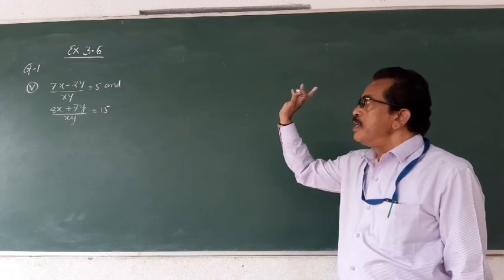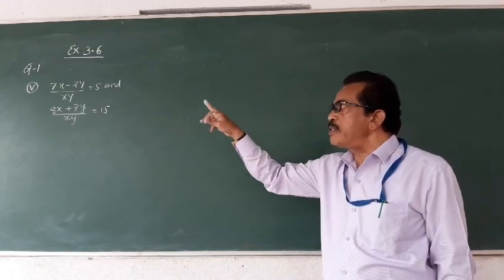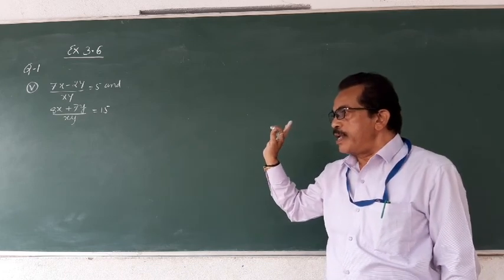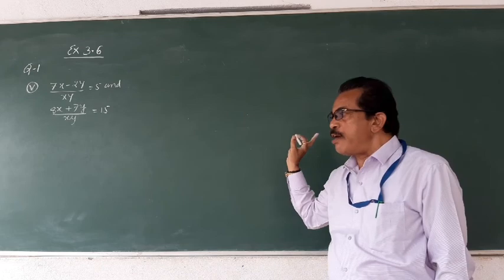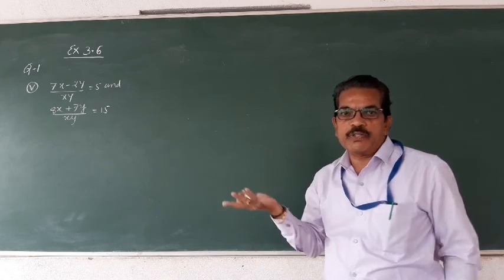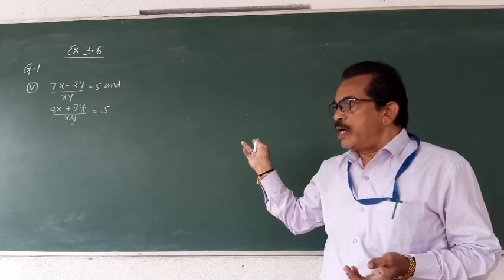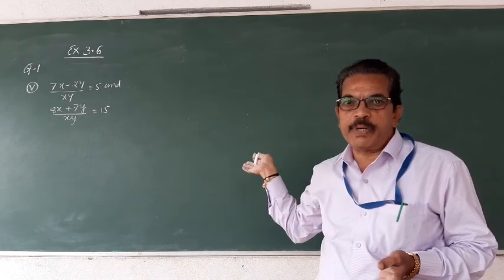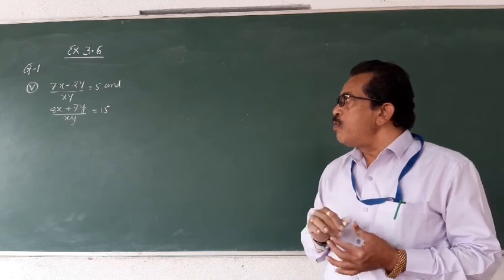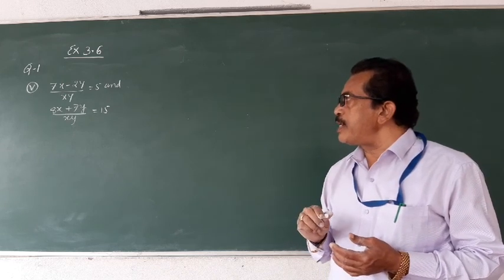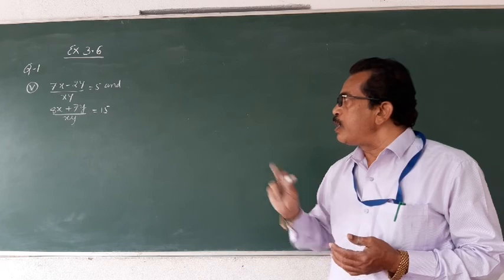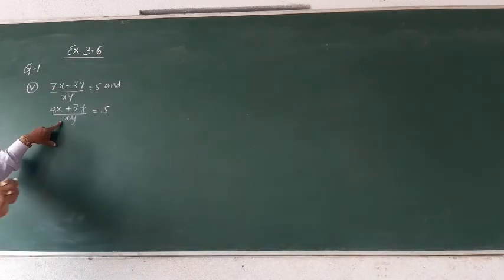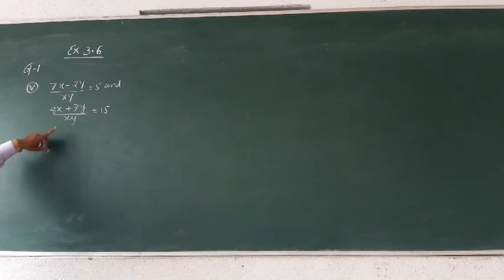Good morning my dear students. We are looking at Exercise 3.6, first main, fifth one. Already we have solved four problems, and I have given you some homework. I will continue along with those homework problems from the previous classes. Now let us move to the fifth one: 7x minus 2y divided by xy equals to 5, and 8x plus 7y divided by xy equals to 15.